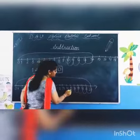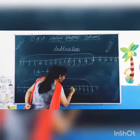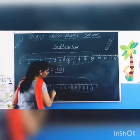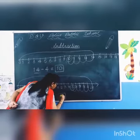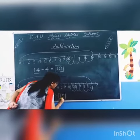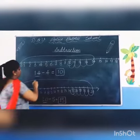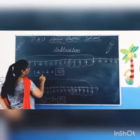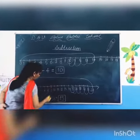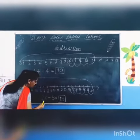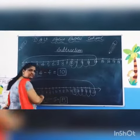So answer is 15. 14 minus 4 equal to 10 and 20 minus 5 equal to 15.